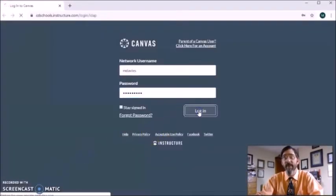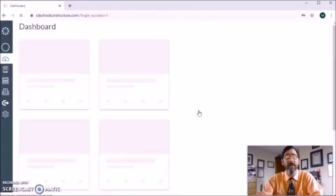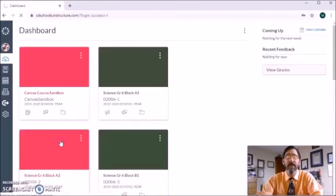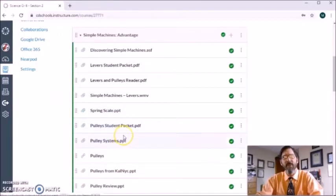As far as some of the resources available to you, the first and foremost would be the Canvas website. After logging in, there are a few things that you have access to that I would like to point out. You just need to choose your block and the resources for today would be the levers and pulleys reader, the pulleys student packet, hoping to do a video demonstration as well. So let's get started.